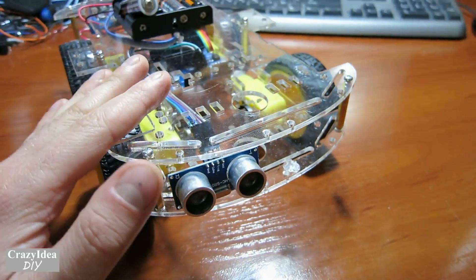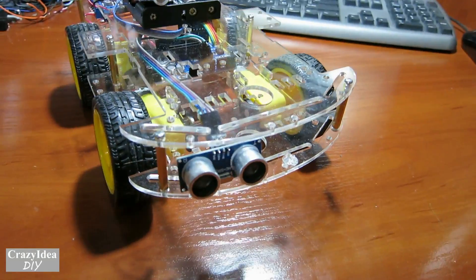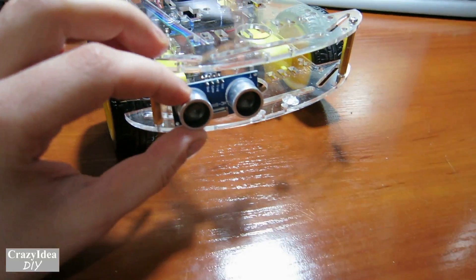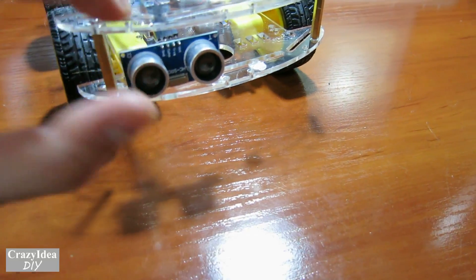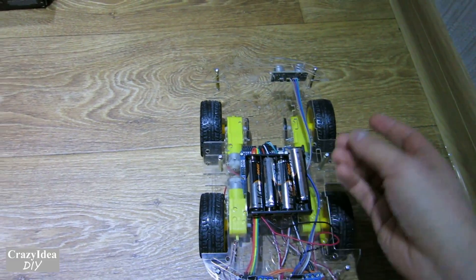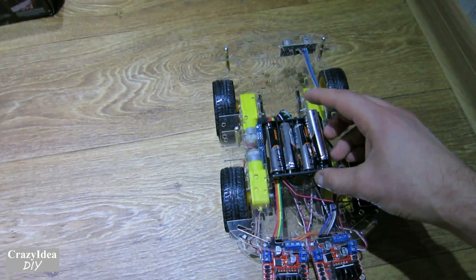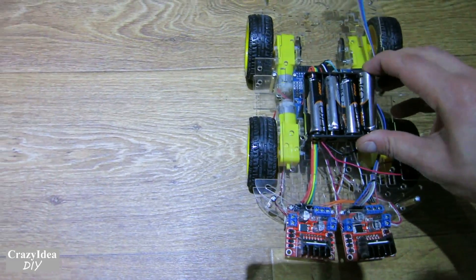This car will go around obstacles by turning to the right. In this case, it would be better if you attach the ultrasonic sensor on the left side. Now we will check how it will go. If you desire, you can set a switch, but I don't have any switch.